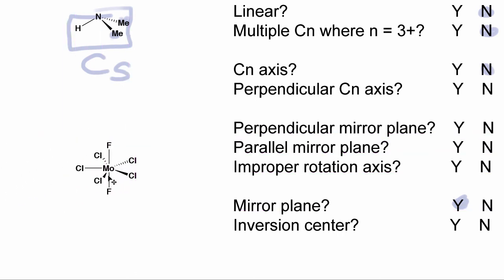The next molecule we're going to look at is this trans-pentachloro trifluoro molybdenum complex. Looking at this complex, we have five chlorine ligands within the equatorial plane and two fluorines in the axial positions. Going through the point groups: is it linear — no. Does it have multiple Cn axes? Down the fluorine-molybdenum-fluorine bond we can see a C5 axis that rotates all of the chlorines into one another, but we don't have any other Cn axes greater than three, so the answer to multiple high-order Cn axes is no.